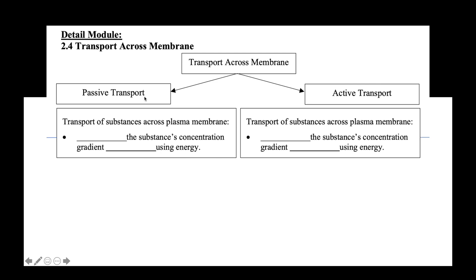Passive transport refers to the transport of substances across the plasma membrane, down the substance concentration gradient, without using energy. However, active transport refers to the transport of substances across the plasma membrane against the substance concentration gradient, by using energy.